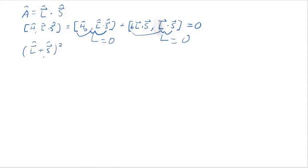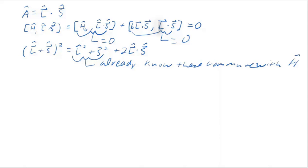When you expand that out, you find L dot S. And we already know that these guys commute with the Hamiltonian. I say that because you're going to check it out for homework. That's the full Hamiltonian. So you'll check out with homework that L squared plus S squared commutes with the Hamiltonian. And we've already checked out L dot S.